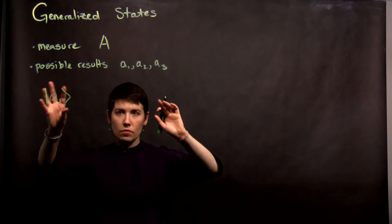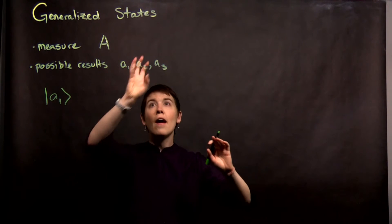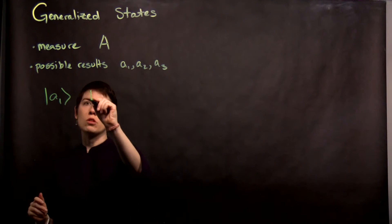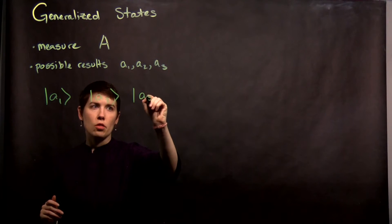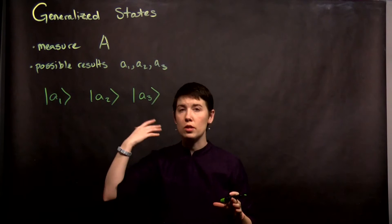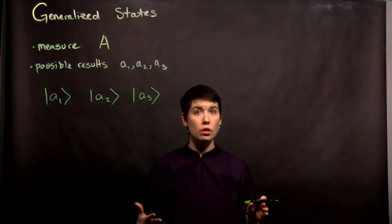We can just name each of these basis kets after the measurement that it corresponds to. So A1, A2, A3. This is analogous to our spin up, spin down, but now there's actually three of them.